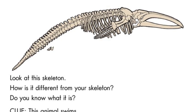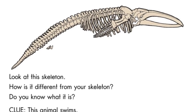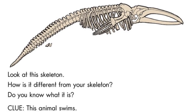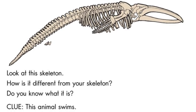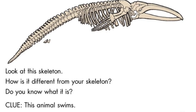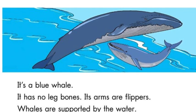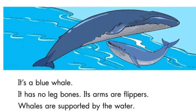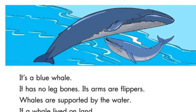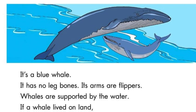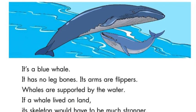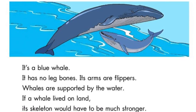Look at this skeleton. How is it different from your skeleton? Do you know what it is? Clue: this animal swims. It is a blue whale. It has no leg bones. Its arms are flippers. Whales are supported by the water. If a whale lived on land, its skeleton would have to be much stronger.